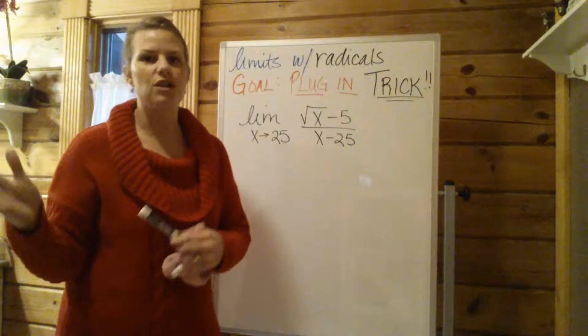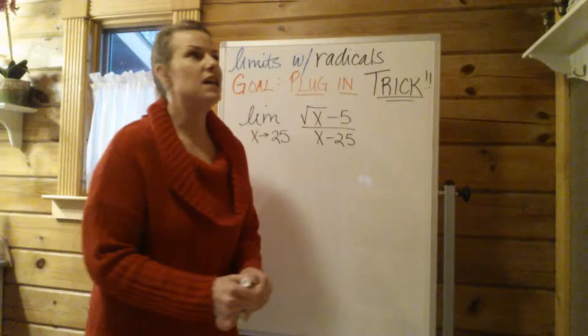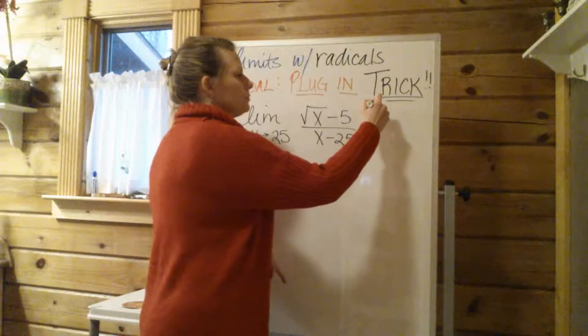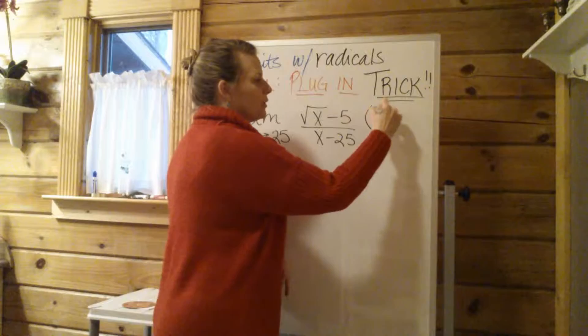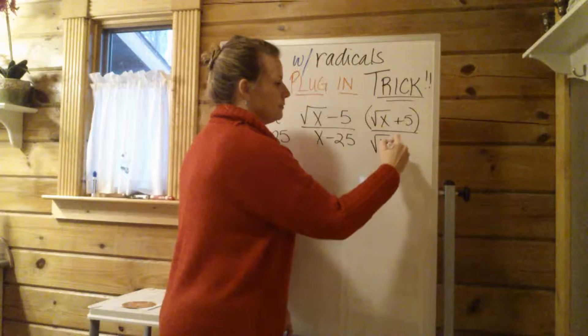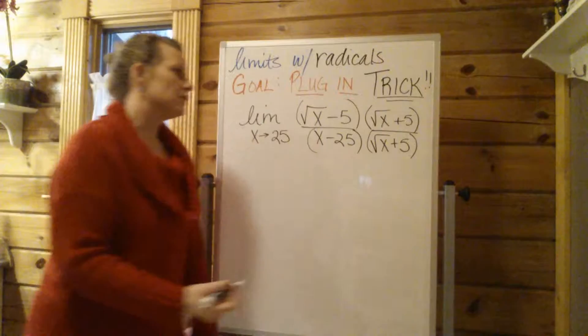You've probably never rationalized a numerator before. Usually you rationalize the denominator. If you don't remember that, that's fine. Just remember the way you rationalize something is the expression with the radical, you're going to multiply by what's called the conjugate, which means instead of the square root of x minus 5, we're going to multiply by the square root of x plus 5. And when you're rationalizing, you always multiply by the same thing on top and bottom.